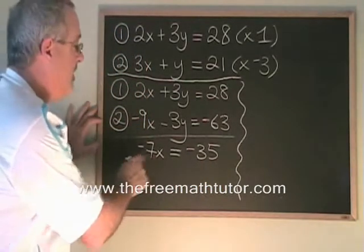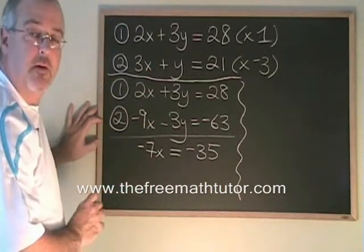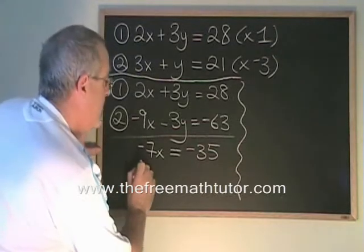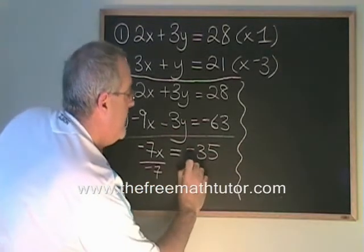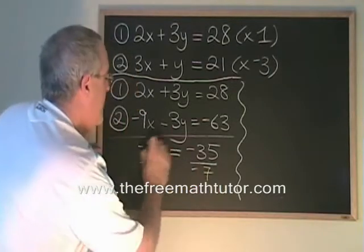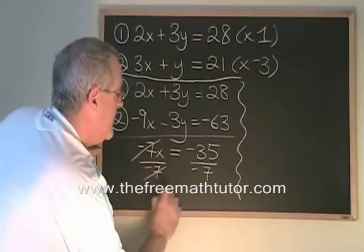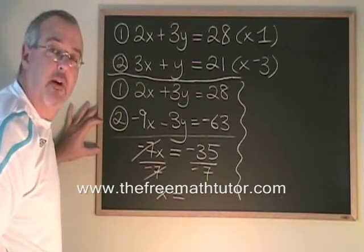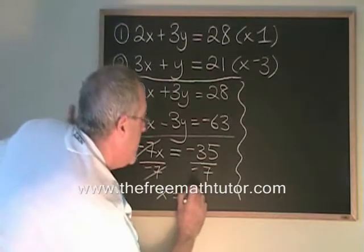Now we have that single equation with a single variable that is so easy to solve. If we divide both sides of this by negative 7, these cancel. Our x is isolated, and negative 35 divided by negative 7 is positive 5.